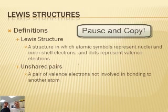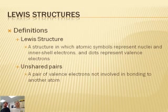You should pause the video and write down these definitions. The Lewis structure is the symbolic representation that shows the structure of a particular molecule. The valence electrons are indicated either as participating in a bond or as an unshared pair.